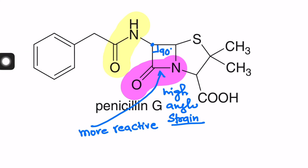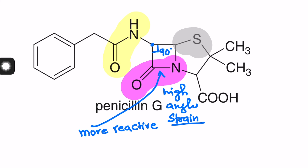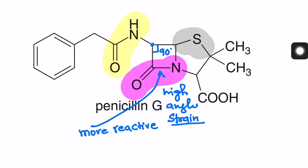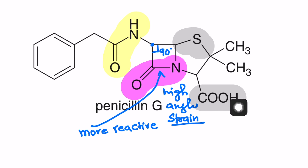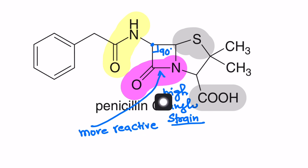The other functional groups present in this molecule — penicillin G — are thioether and one more, which is carboxylic acid. So because of this strained amide, it is more reactive. Thank you.